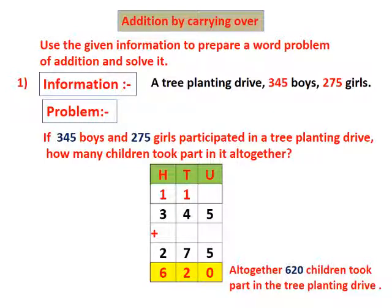First we start addition from the units place. In the units place, 5 units plus 5 units is equal to 10 units. 10 units means 1 ten and 0 units. So we write 0 in the units place in the sum. Then we write the carried over 1 above the tens column.